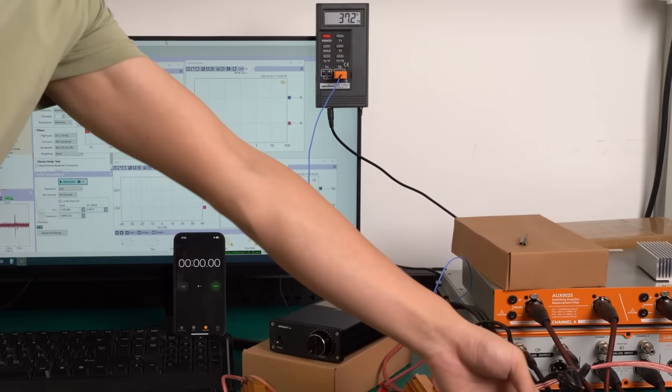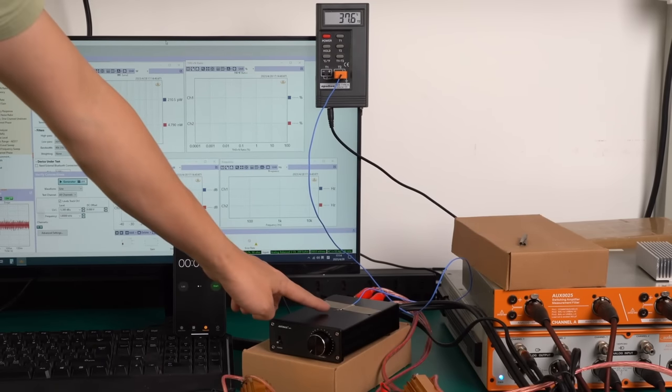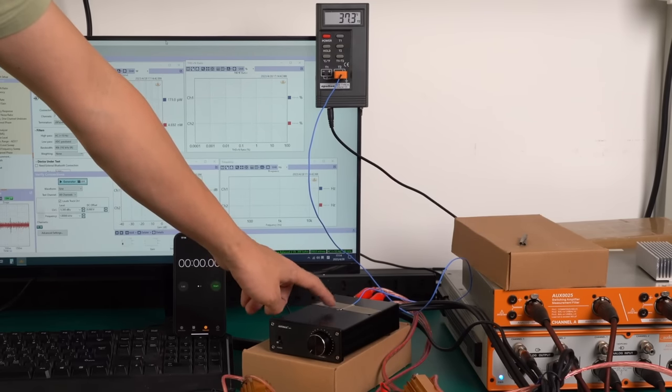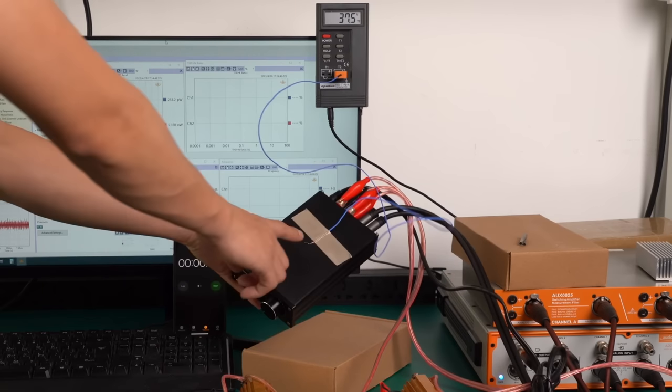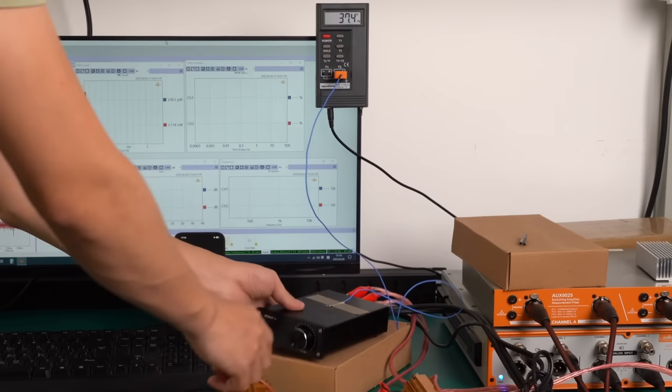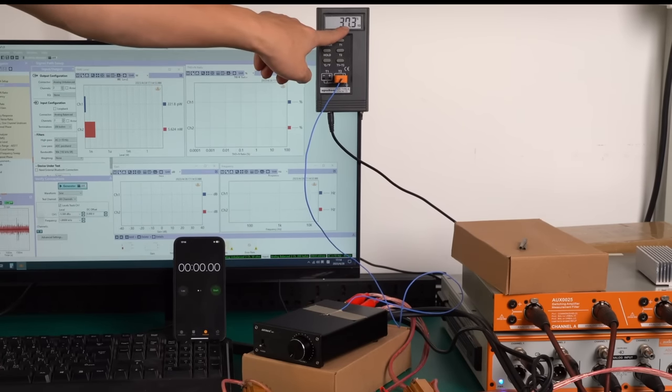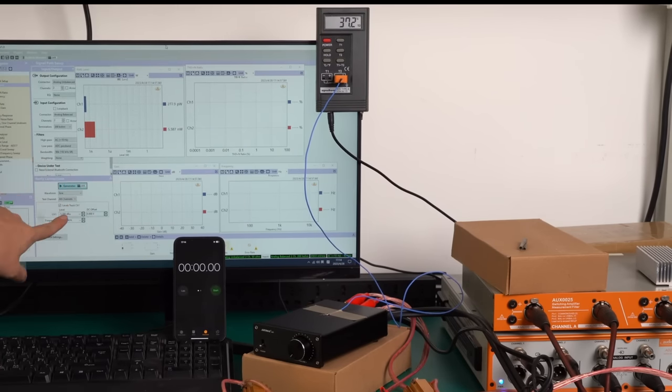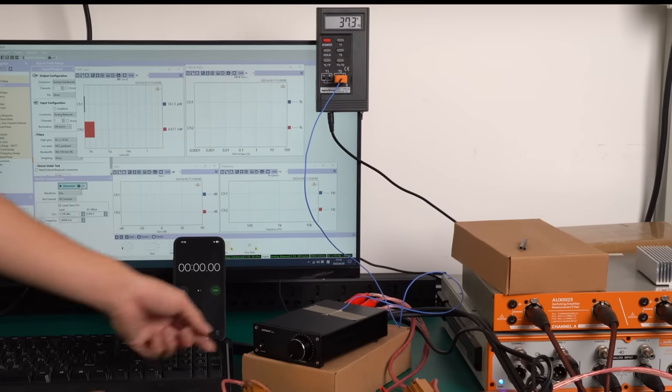First up, let's test the A07. I've attached a thermal probe to the A07's casing, to monitor real-time temperature changes. I will set up the parameters so that the device is working at full load, which can be considered a stress test. Meanwhile, we'll also track the duration from startup to overload protection. All right, let's get this started.